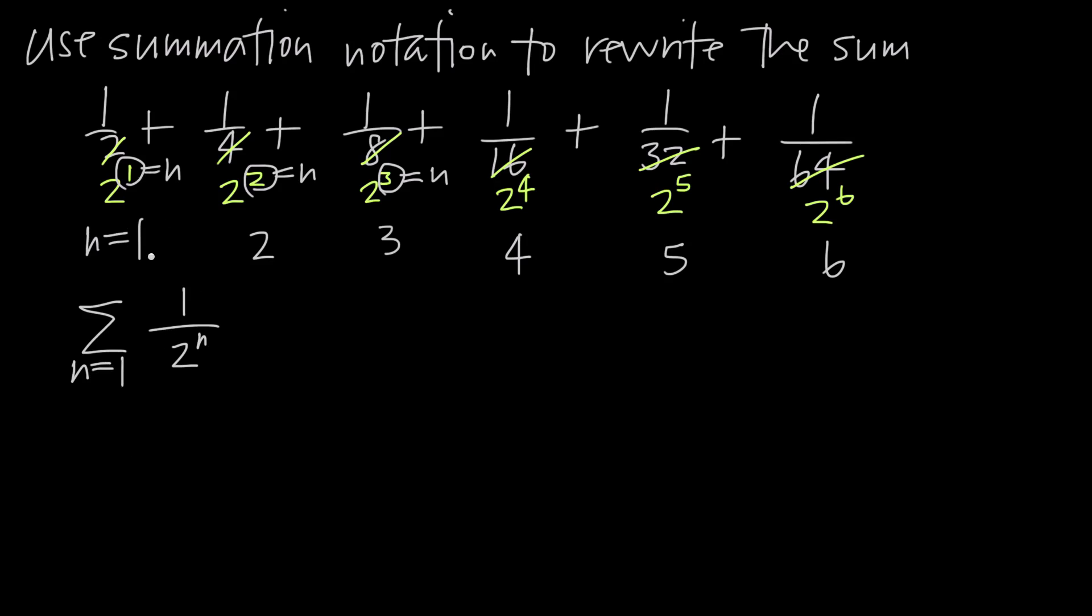If we had said n starts at 0, if we had started at n equals 0 and then done n equals 1, 2, 3, 4, and 5, then this first exponent right here would have been n plus 1 because this would have been the n equals 0 term. And to get to 1 here, we would have had to add 1, so it would have been n plus 1. We could have done that. We could have said n equals 0, and then the function would have been 1 over 2 to the n plus 1, but it's cleaner just to say n equals 1 so that we can start this at 1 over 2 to the n.